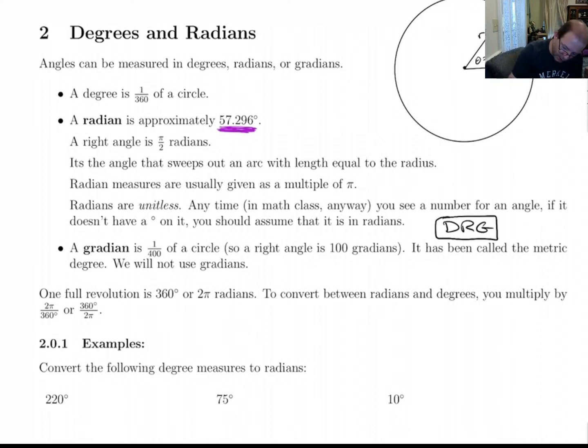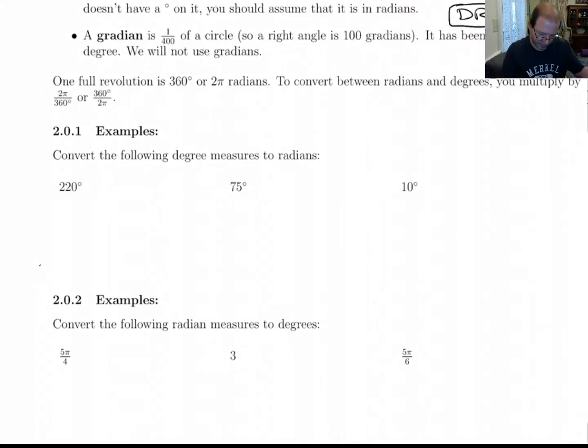I want to do a few examples here converting angles between degrees and radians. What you want to do is multiply by 2π/360 or 360/2π. The idea here is that 360 degrees is equal to 2π radians. So if you multiply by 360 degrees over 2π, if those two quantities are equal, then you're just multiplying by 1. And same thing if you multiply by its reciprocal.